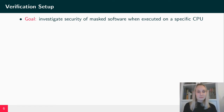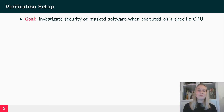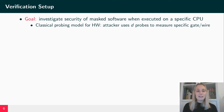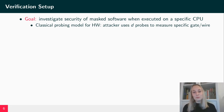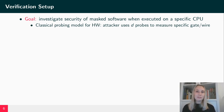Our goal is to investigate the security of masked software when executed on the Swerve core using formal methods. When it comes to such an analysis, one has to think about the attacker's abilities, and we do that by using a certain probing model. The classical probing model applied for hardware equips the attacker with D probes, which can be distributed as the attacker likes in the hardware circuit, and each probe delivers the value of a specific gate or wire.